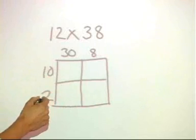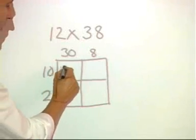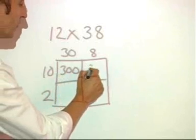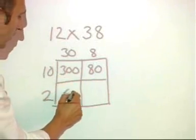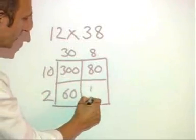So, now I can do each of the separate calculations. 10 times 30 gives me 300. 10 times 8 gives me 80. 2 times 30 is 60, and 2 eights is 16.